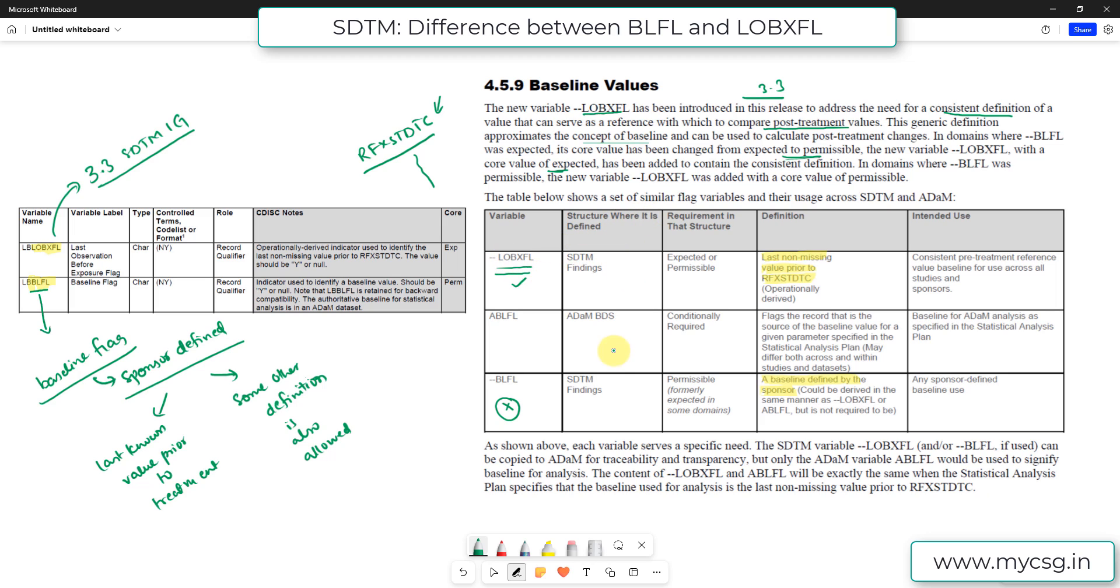So there are some domains in which you may not have your BLFL, and there can be some domains wherein your baseline flag is an expected variable. So in all the places where LOBXFL with a core value of expected has been added to contain the consistent definition. In domains where BLFL was permissible, the new variable LOBXFL was added with a core value of permissible.